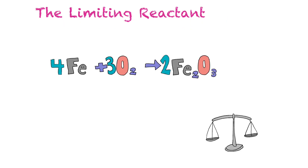If you recall, balanced chemical equations tell us precisely how many atoms or molecules of a substance are required to react to produce certain products. In this reaction, we have four iron atoms reacting with three molecules of oxygen to produce two molecules of iron three oxide.